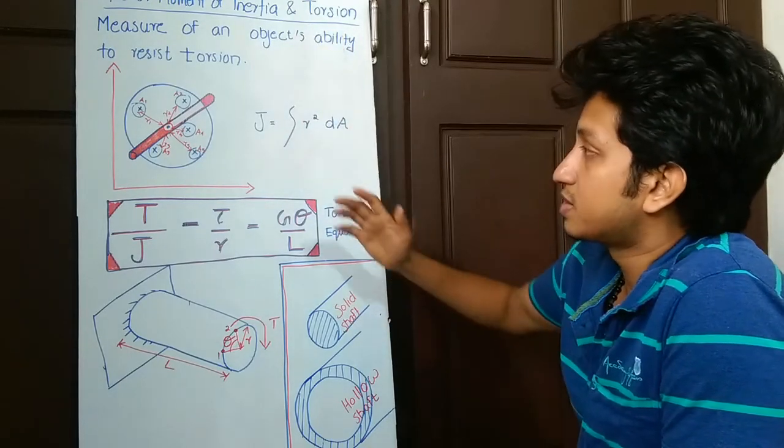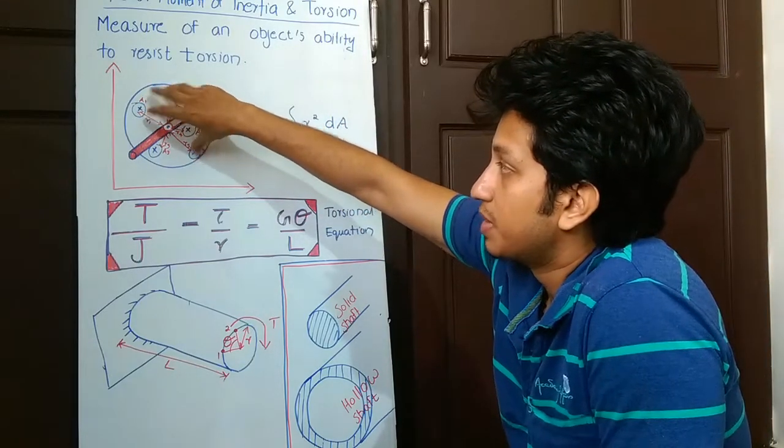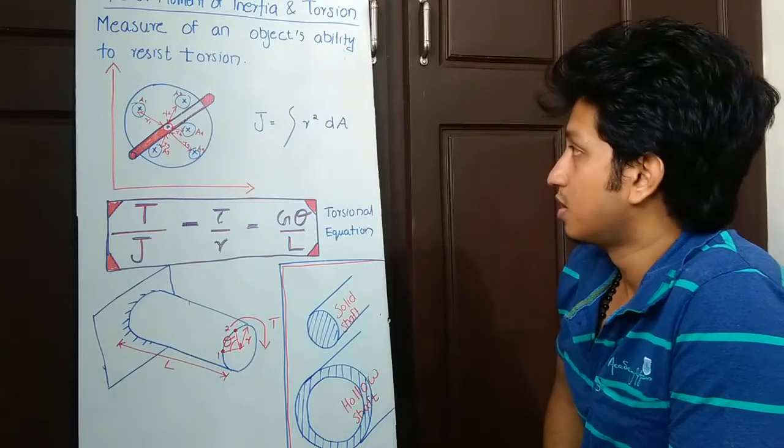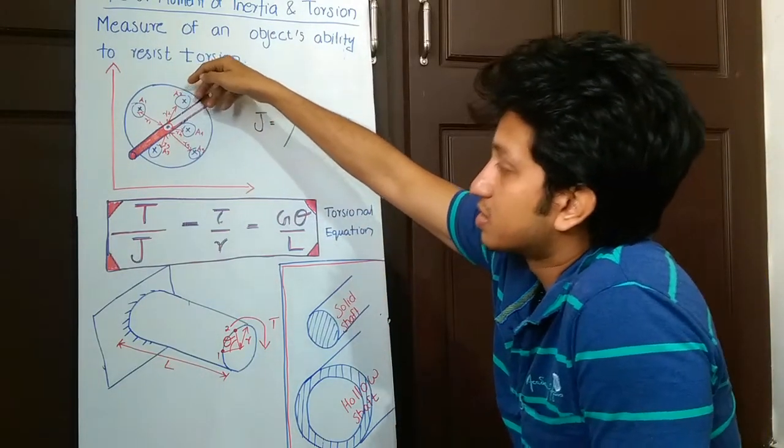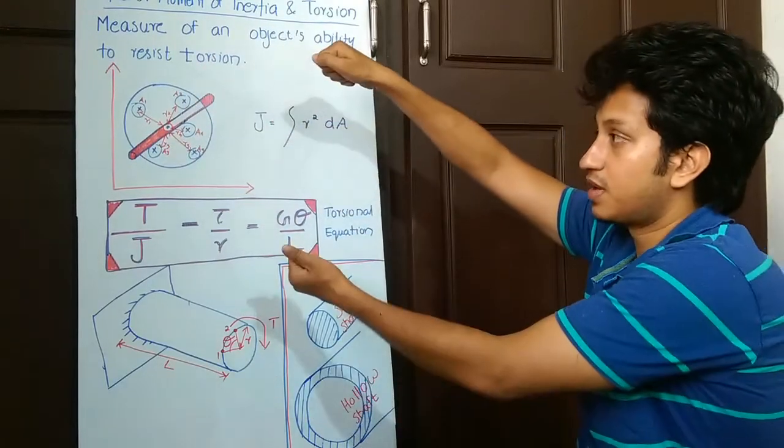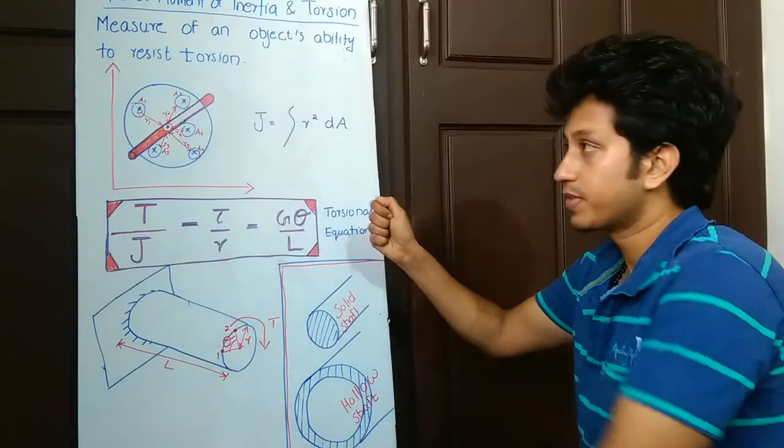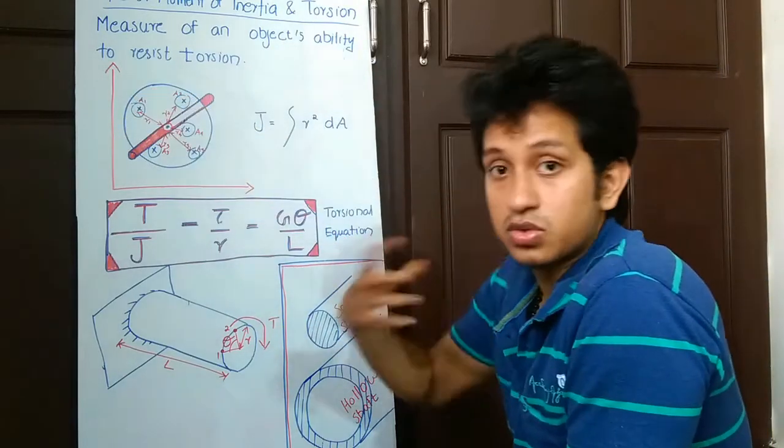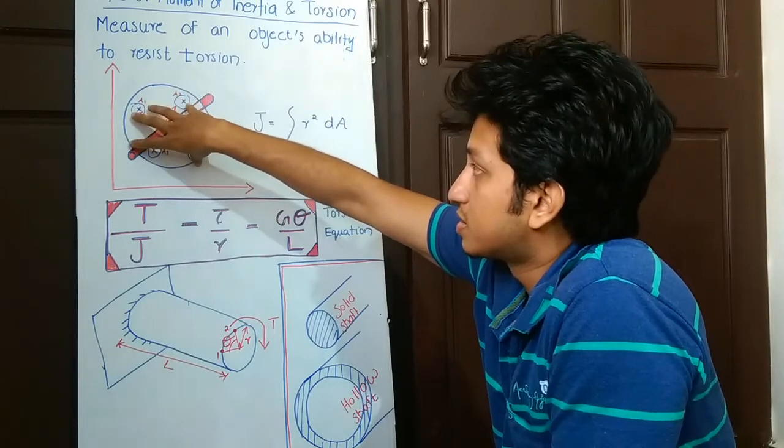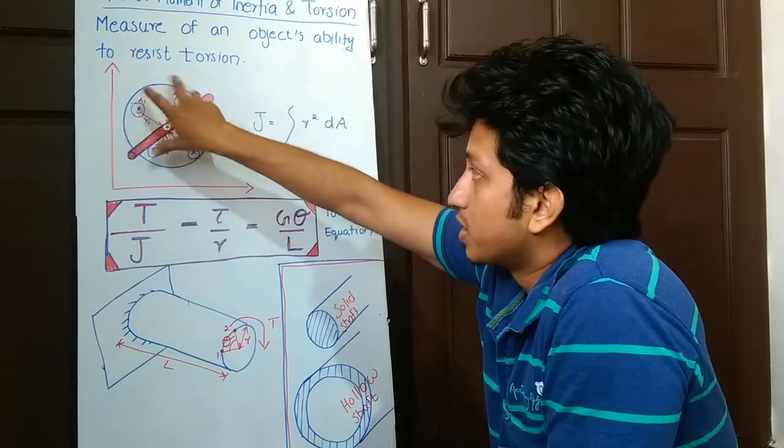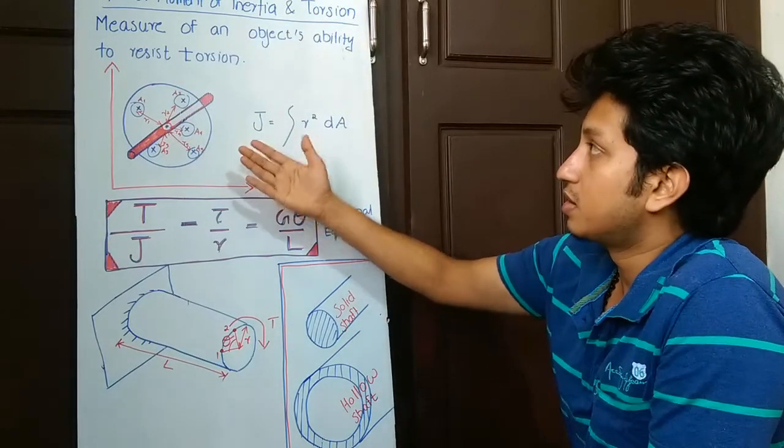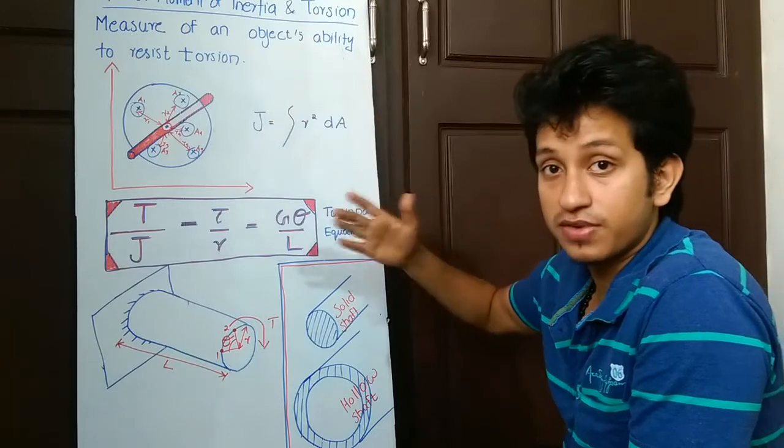If this disc was fixed on this shaft and I'm trying to rotate it, it doesn't want to rotate. We're creating a shear and it's getting sheared. In that case, the polar moment of inertia is really helpful. In that case, we are applying torque and it's trying to be rotated.